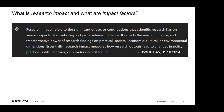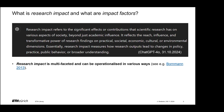When I asked ChatGPT for a summary of what research impact is about, I found it to be a nice overview. ChatGPT answered that research impact refers to the significant effects or contributions that scientific research has on various aspects of society beyond just academic influence. It reflects the reach, influence, and transformative power of research findings on practical, societal, economic, cultural, or environmental dimensions. Essentially, research impact measures how research outputs lead to changes in policy, practice, public behavior, or broader understanding. So as we can see, research impact is pretty multidimensional and multifaceted.